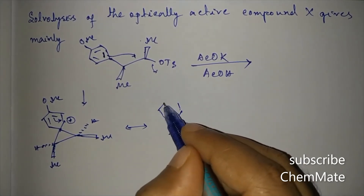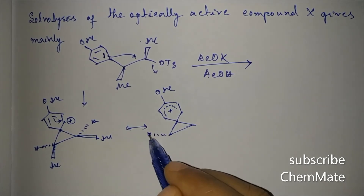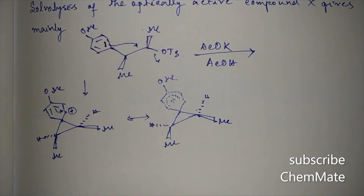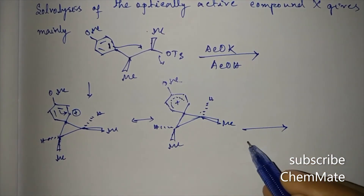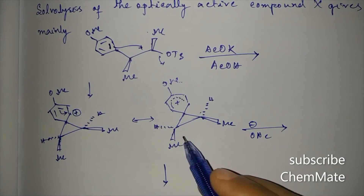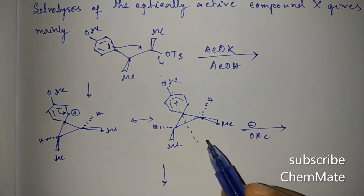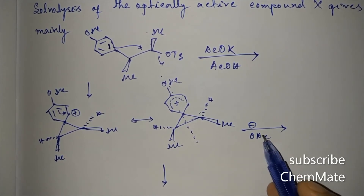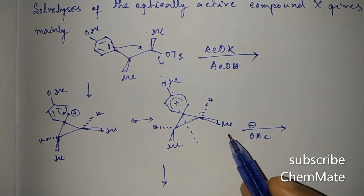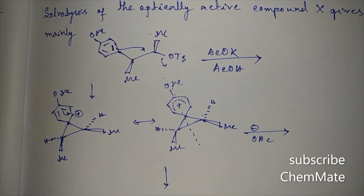This phenonium ion cation is resonance stabilized. We will not draw all resonating structures, but the resonance hybrid has a plane of symmetry. Because of this plane of symmetry, attack by the OAc minus nucleophile at the two possible carbons is equally probable — 50% attack at each carbon.